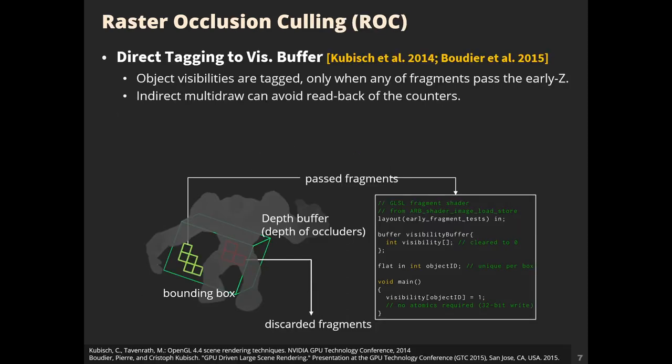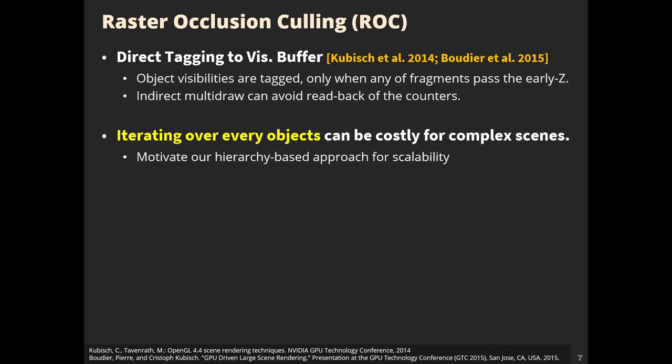Another full-object bounds method is Raster Occlusion Culling (ROC). ROC tests visibility by direct tagging to a visibility buffer. If any of the fragments in the object bounds pass the early Z, object visibilities are tagged, and it utilizes indirect multi-draw for a store-free pipeline. However, ROC rasterizes the bounds of all objects for occlusion tests, so for complex scenes, iterating over every object can be costly.